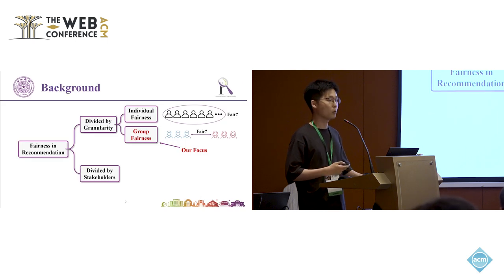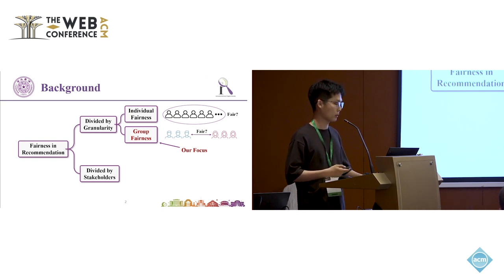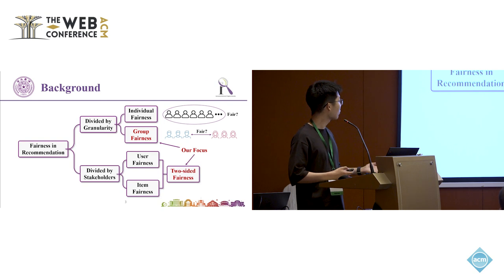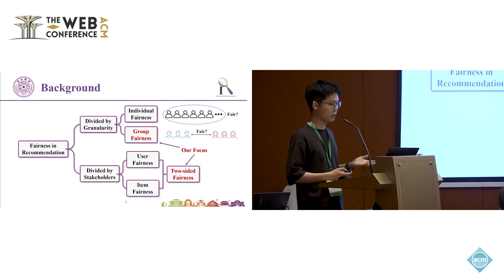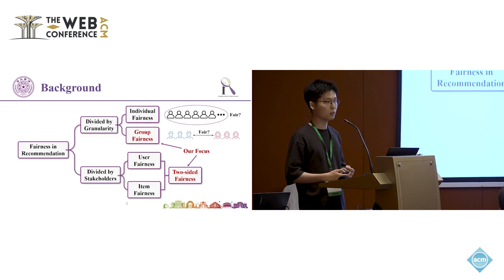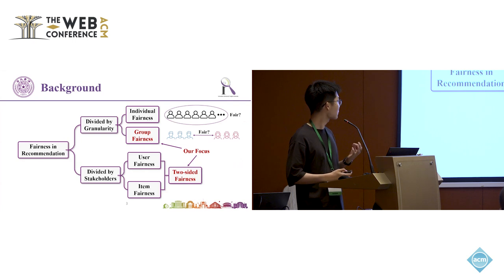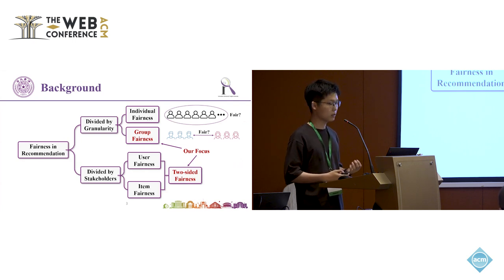Recently, fairness in recommendation has attracted increasing attention. It can be concentrated at an individual level or group level. In this work, we focus on group fairness. Based on the stakeholders, fairness in recommendation can be divided into three types: user fairness, which aims to provide similar recommendation performance across different user groups; item fairness, which aims to ensure various exposure opportunities or provide similar performance across various item groups; and lastly, two-sided fairness, which seeks to ensure fairness for both users and items at the same time.